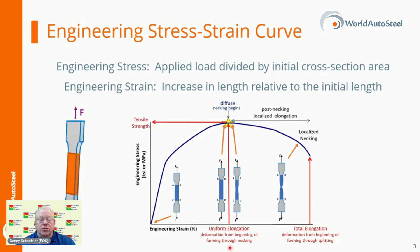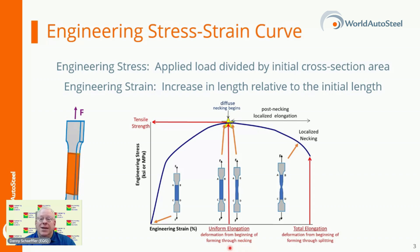At that point, engineering stress decreases with increasing strain, progressing until the sample fractures. However, metals get stronger with deformation through a process known as work hardening or strain hardening. As the tensile test progresses, additional load must be applied to achieve further deformation even after the ultimate tensile strength is reached. Understanding true stress and true strain helps to address the need for additional load after the peak strength is reached.